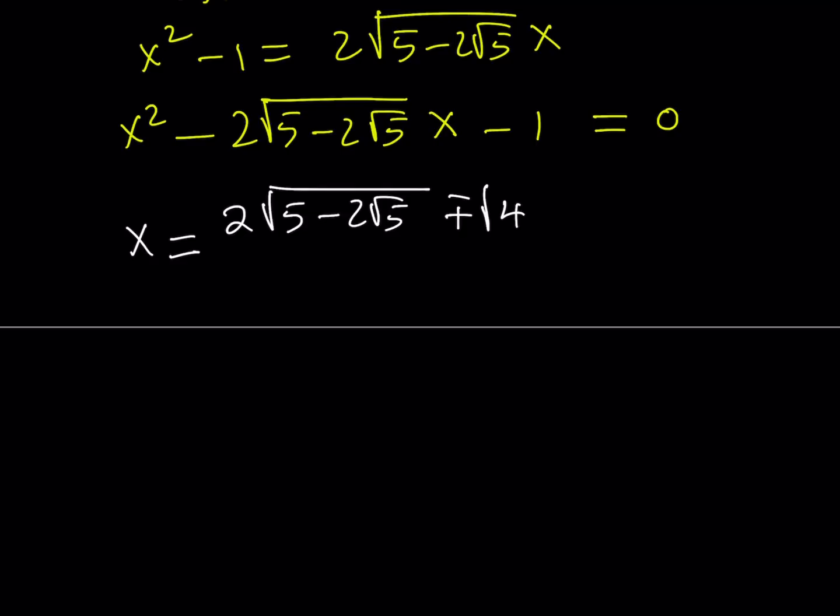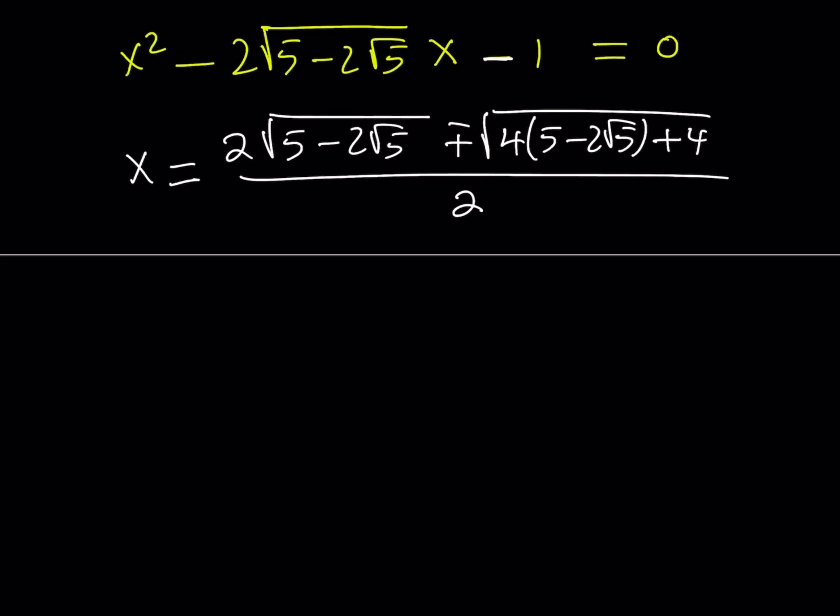We can safely say that it's negative b plus minus the square root of b squared. Now, when you square the b, you're going to get the following. Minus 4ac, but there's a negative sign here, so it's going to become plus 4. All over 2. Great. Now, what's inside the parentheses? If you distribute, or if you take out a 4, you're going to get the following. The square root of 4 is going to be 2, so I can take it out like this. Inside, you're going to have 6 minus 2 root 5, which is fairly interesting. I'll tell you how to simplify that in a little bit.